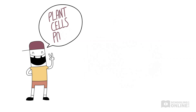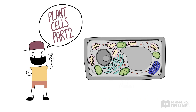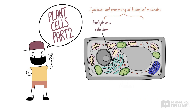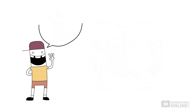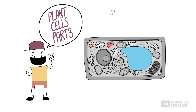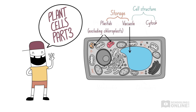This lesson will focus on organelles responsible for the synthesis and processing of biological molecules, including the endoplasmic reticulum, ribosomes, and Golgi apparatus. We will also cover organelles involved in producing energy and nutrients: the mitochondria and chloroplasts. In the third lesson, we'll look at organelles involved in storage and cell structure, including plastids, the vacuole, and the cytoskeleton.